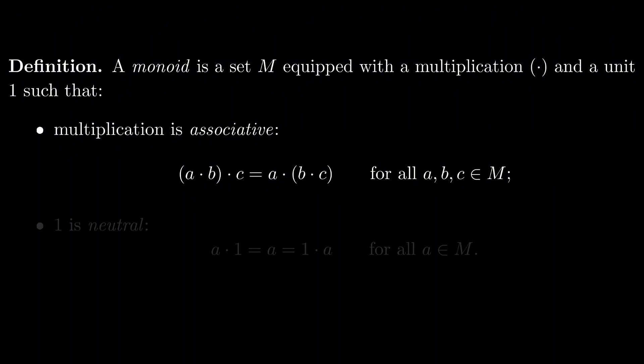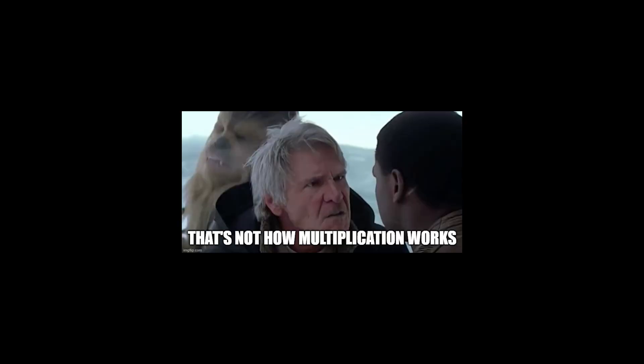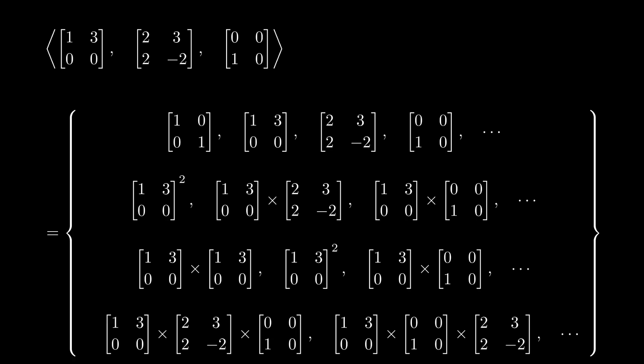Let's consider the category of monoids. What's a monoid? Well, a monoid is a set equipped with a multiplication and a unit such that the multiplication is associative and the unit is neutral. I don't want to dwell too much on monoids, but I feel it's important to stress that a monoid multiplication is not necessarily commutative. There is no reason for a times b to be equal to b times a in general.